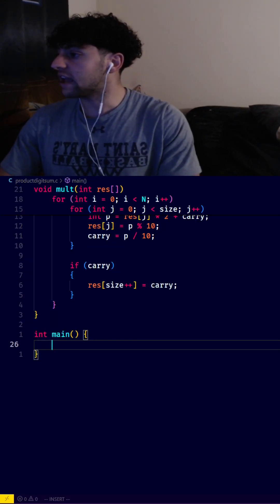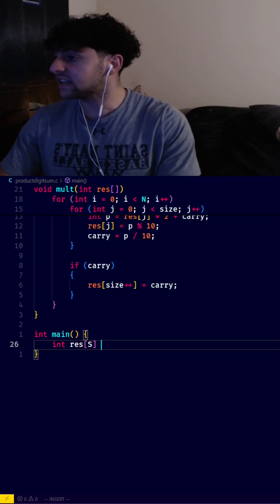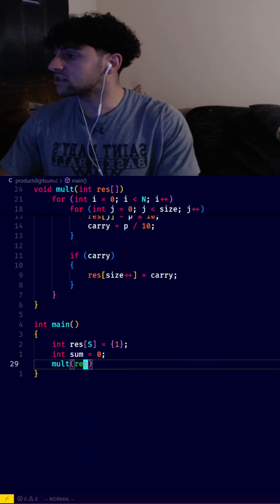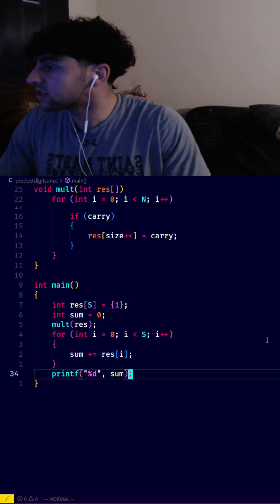In the main function, we need an int array res of size s with the first value set to 1. Then int sum = 0 and call mult on res. We sum the digits in our array and print the sum.